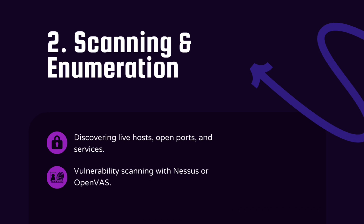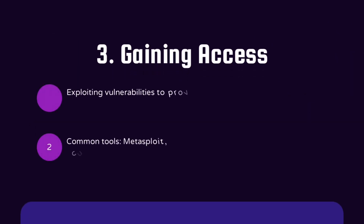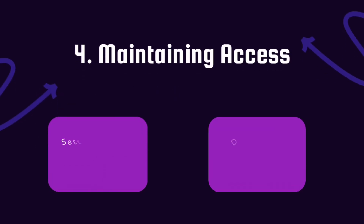Once vulnerabilities have been identified, the next step is gaining access. This is where ethical hackers attempt to exploit those vulnerabilities using tools like Metasploit. The goal is to prove that a vulnerability can be used to gain unauthorized access, but without causing harm.